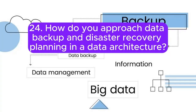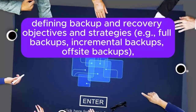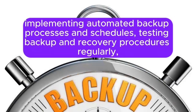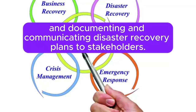Question 24: How do you approach data backup and disaster recovery planning in a data architecture? The approach involves identifying critical data assets and systems, defining backup and recovery objectives and strategies such as full backups, incremental backups, and off-site backups, implementing automated backup processes and schedules, testing backup and recovery procedures regularly, establishing recovery point objectives (RPOs) and recovery time objectives (RTOs), ensuring data integrity and consistency, and documenting and communicating disaster recovery plans to stakeholders.